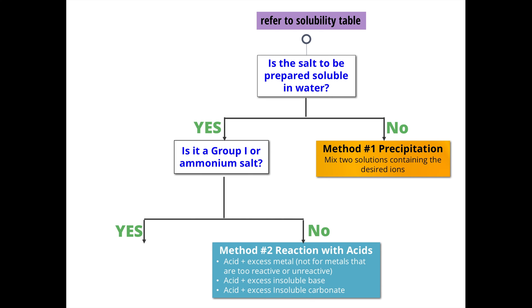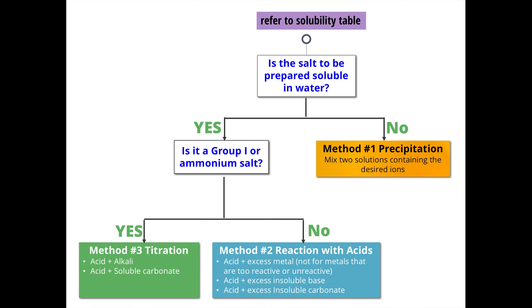If the salt is soluble, we ask a second question: is it a group 1 or ammonium salt? If it is not a group 1 or ammonium salt, we use the reaction with acids method. If it is a group 1 or ammonium salt, we use titration. These are the three different methods.